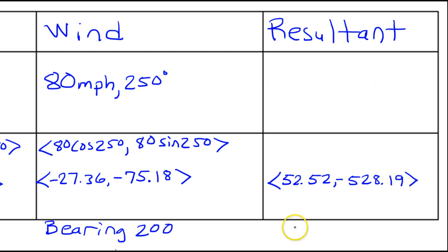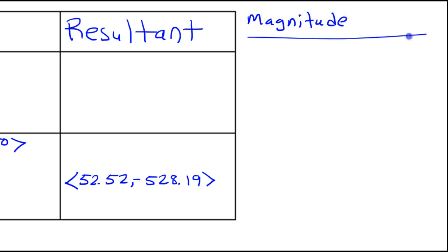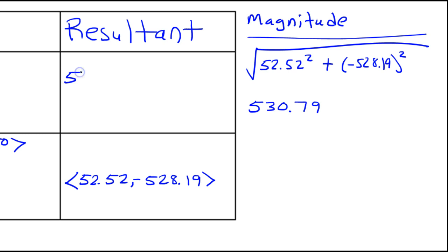We need the magnitude and direction. Starting with the magnitude, we use the magnitude formula: the square root of 52.52 squared plus negative 528.19 squared. That gives us 530.79 miles per hour — that is the ground speed of the plane.